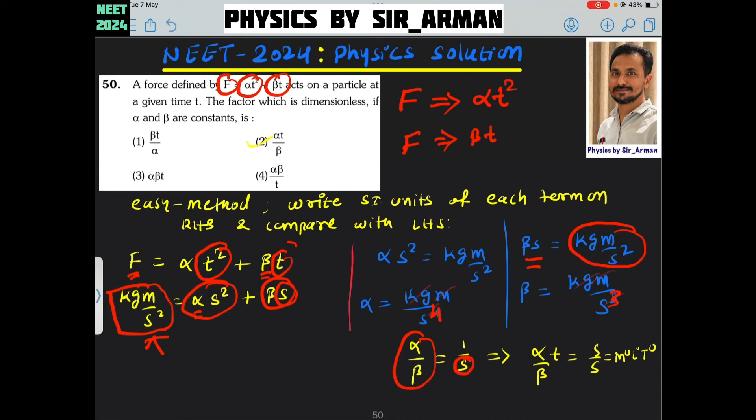Now to remove this S completely, you need one more second here. So if I multiply this term by T, then second second will get cancelled. So the ratio becomes dimensionless, means alpha T by beta is dimensionless. Option 2 is correct.